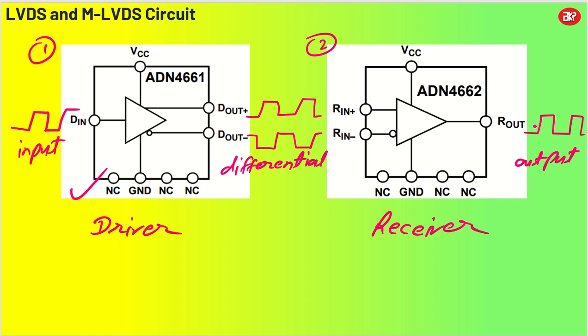We will be talking about LVDS driver and then LVDS receiver. First of all we will try to understand the concepts of LVDS and MLVDS, and what are the advantages and disadvantages. Then we will see some IC applications where you can utilize this so that you can have a complete understanding about schematic design in your FPGA system or maybe DSP processors.